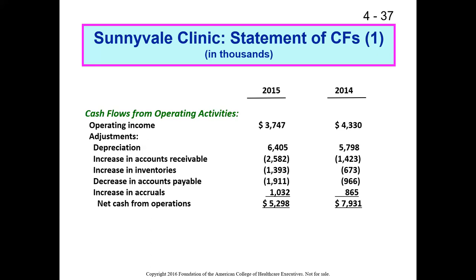For example, a patient comes in and we bill $100. The patient pays a $20 copay on the day of service, and we've billed out the other $80 and are waiting for it. That transaction results in an increase of $80 to accounts receivable. But we've already captured the full $100 in our revenue, even though we only actually got $20 in cash. So if accounts receivable increases by $80, our revenues are overstating the amount of cash we actually have on hand by $80.